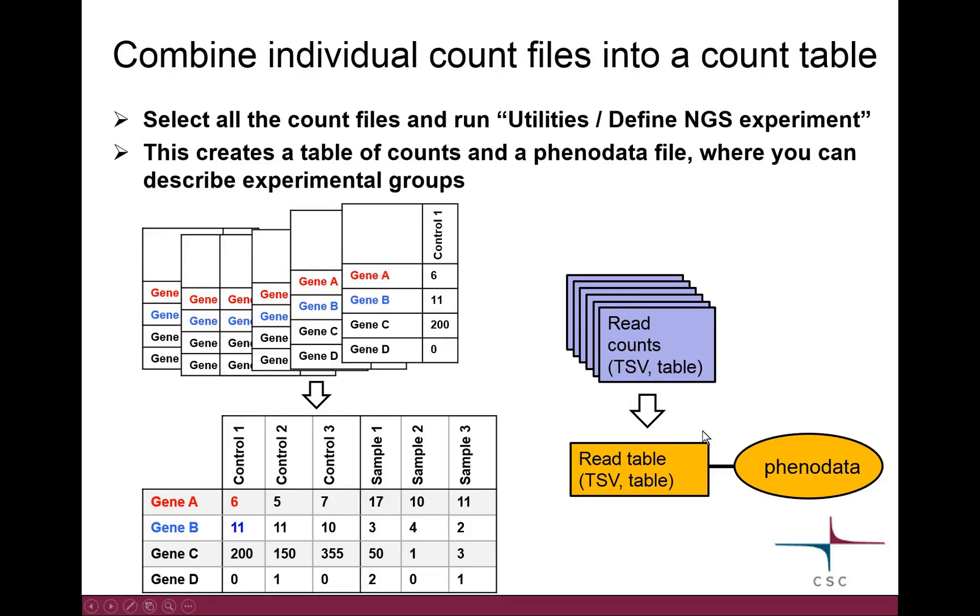Now what we are going to do in the next step is we select all these files. In Chipster you can do it so that you keep the control key down to select several files. And then we run a tool called, it's in the utilities category, it's called Define NGS Experiment. That will then combine all your count files into just one big table.